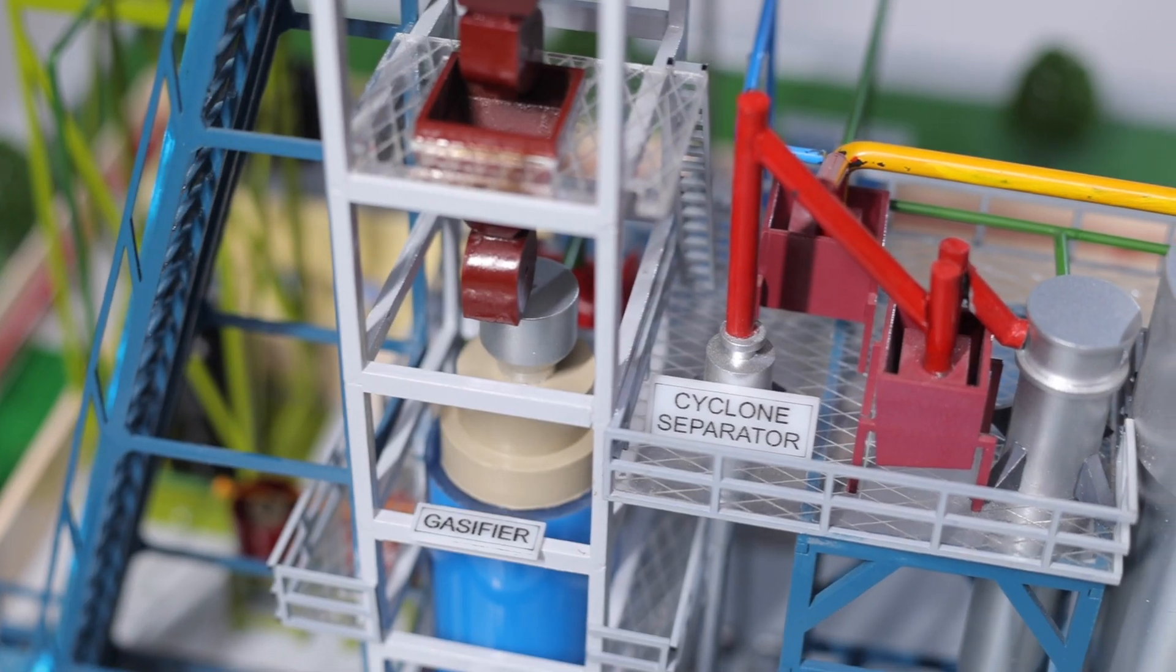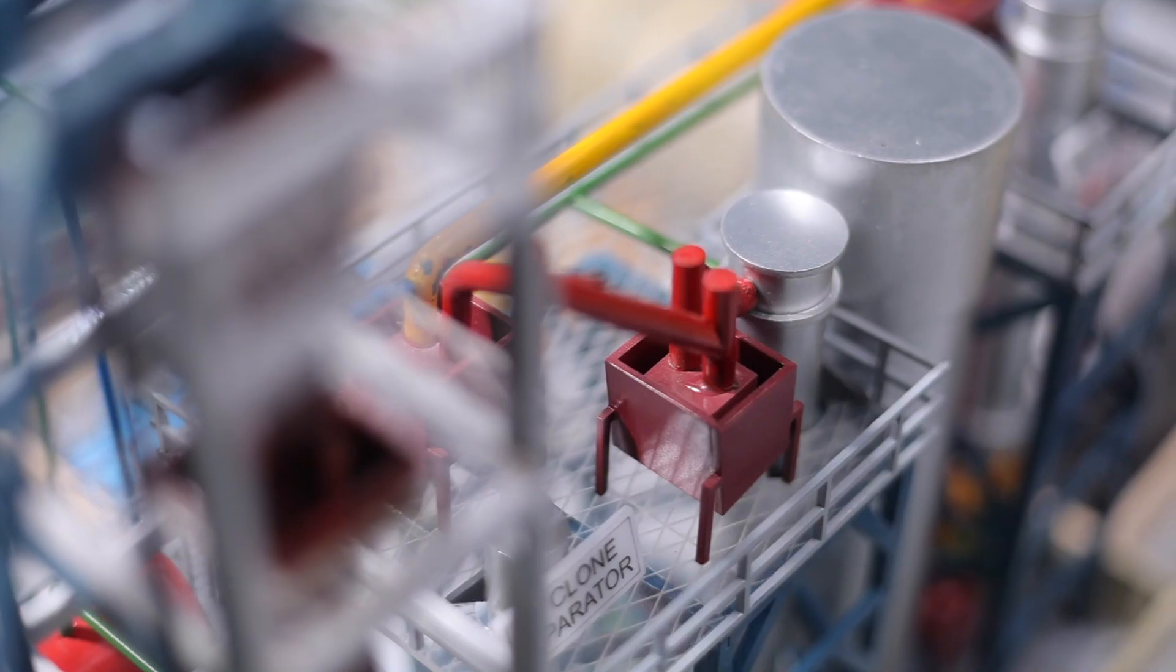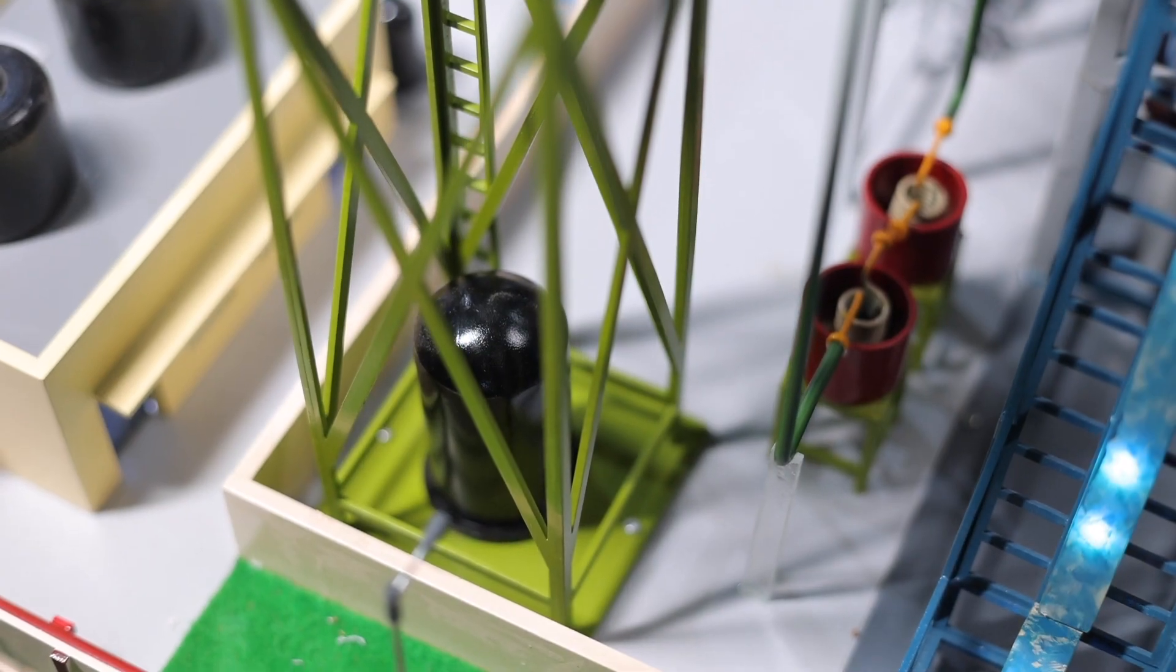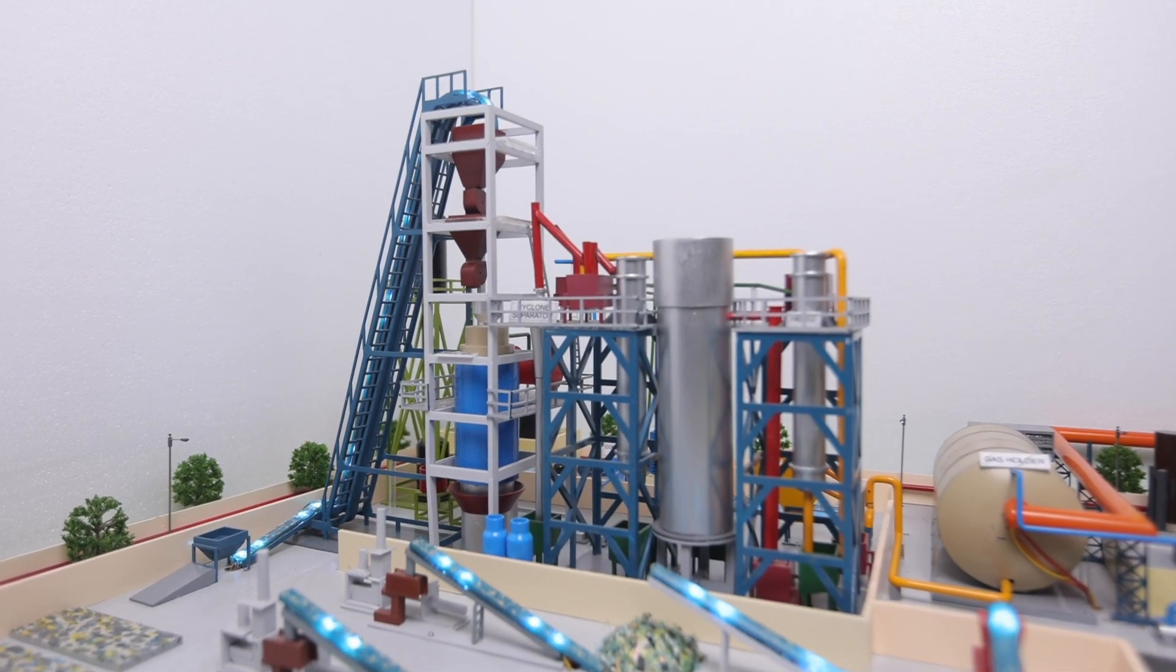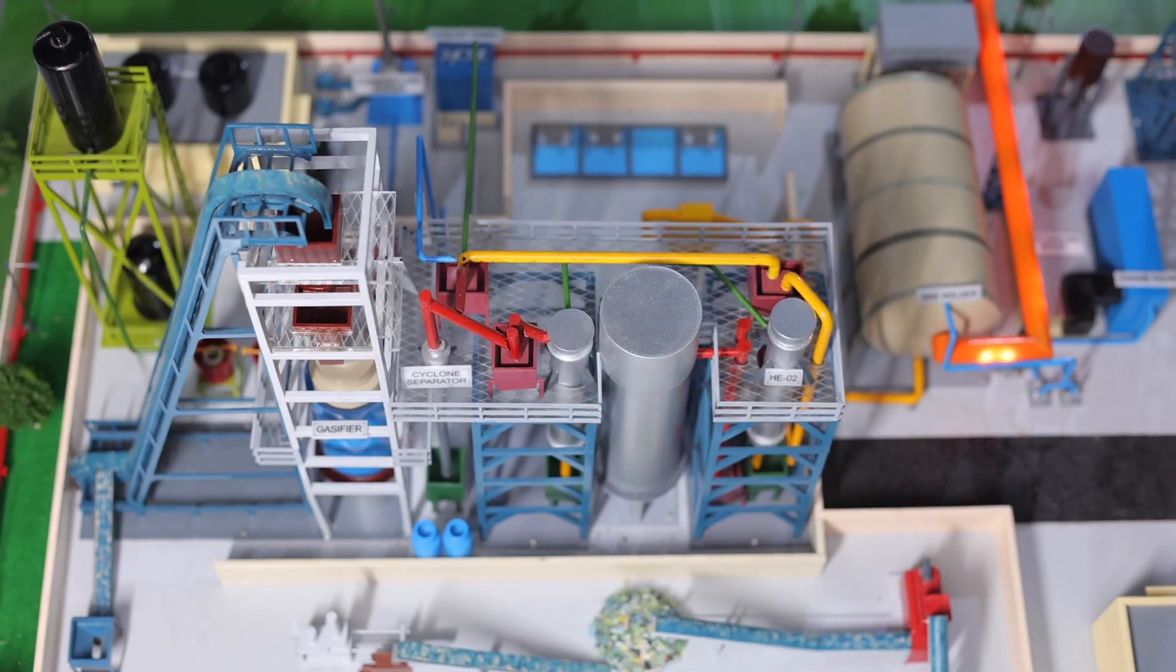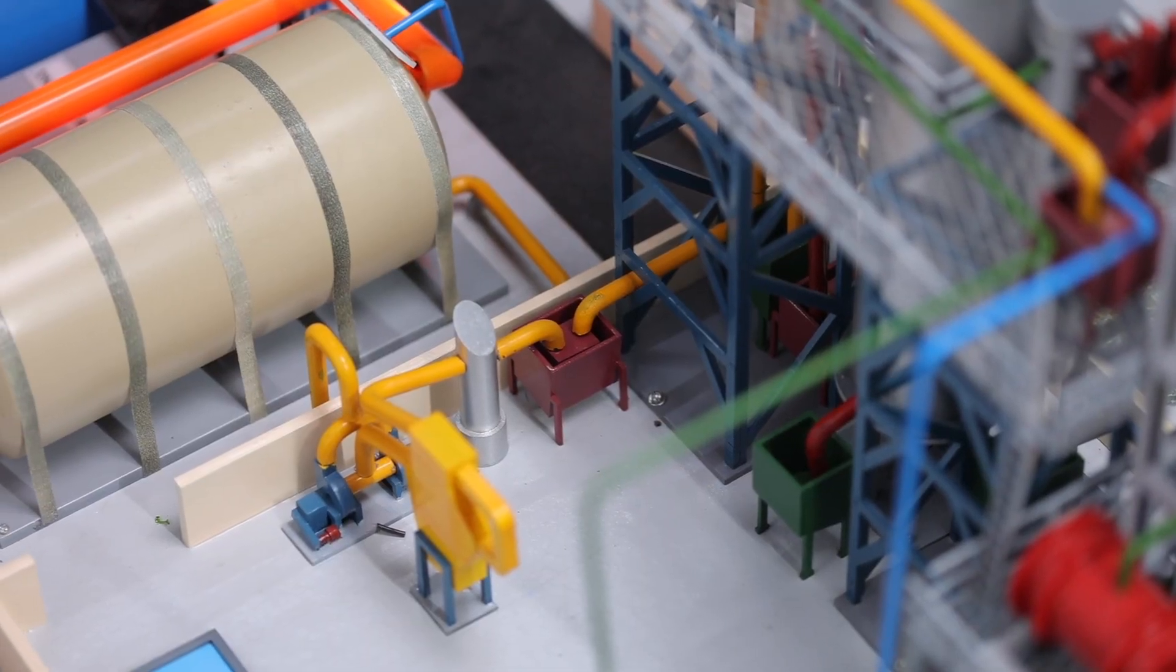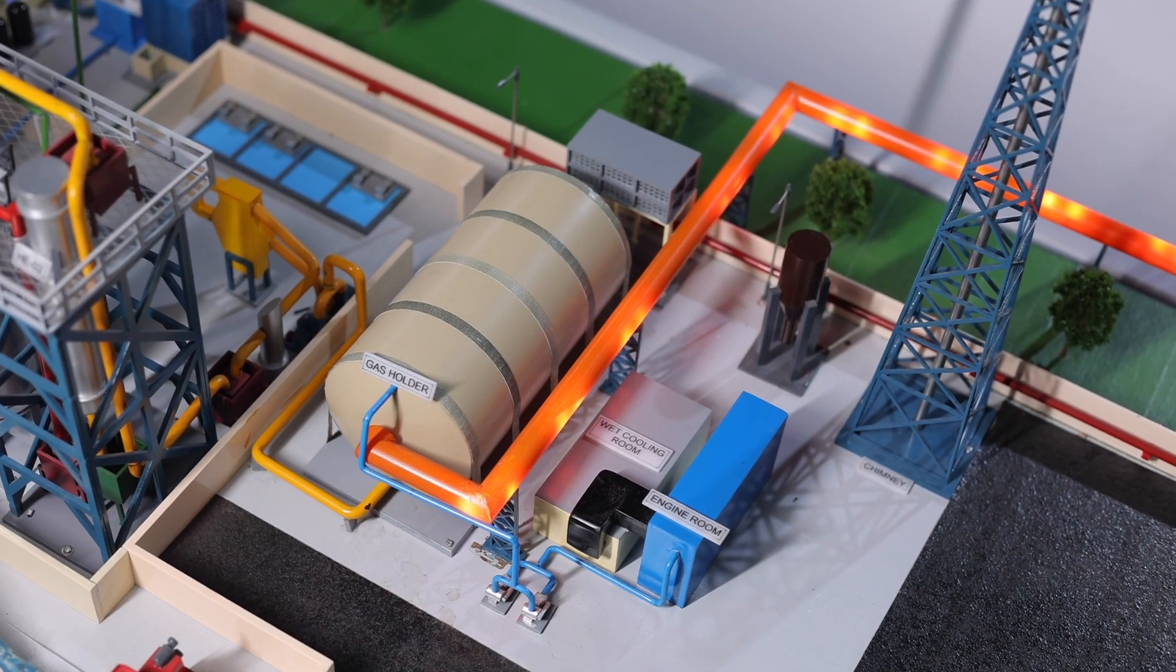Producer gas coming out from the gasifier will carry fuel dust particles. These dust particles are separated in a cyclone separator and gas is sent to the cleaning section for tar removal. Water vapor, tar and phenolic compounds are generated in the gasification process and separated in the gas cleaning section. The producer gas is passed through different cleaning and cooling sections before collecting into the gas holder.